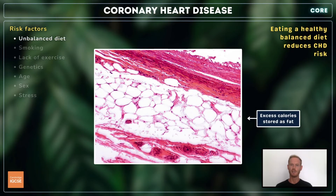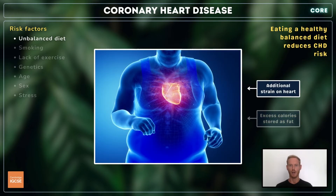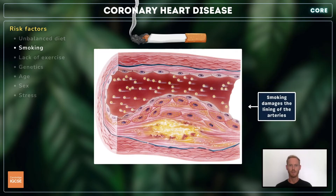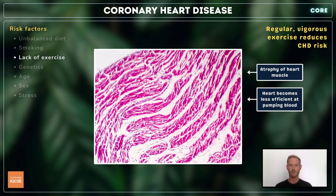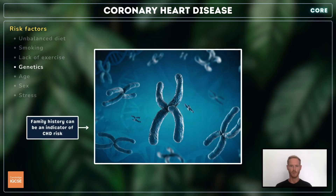Consuming more calories than you expend over time results in fat accumulation and eventually obesity, which puts more strain on the heart. In addition, excessive consumption of certain nutrients can cause inflammation in the arterial walls and the build-up of plaque. Statistically, regular smokers have a much higher chance of death due to CHD than those who don't smoke. Harmful chemicals in the smoke are thought to damage the lining of the arteries, increasing the risk of atheroma and clot formation. When we don't exercise enough, the heart muscle loses strength and tone and becomes less efficient at pumping blood, meaning the heart has to work harder to deliver the required volume, increasing the risk of suffering a heart attack.